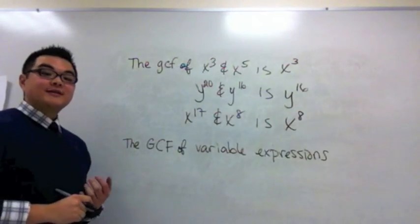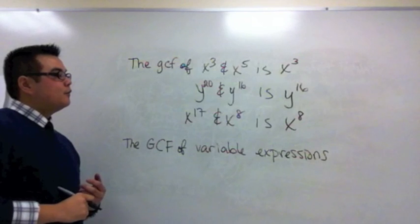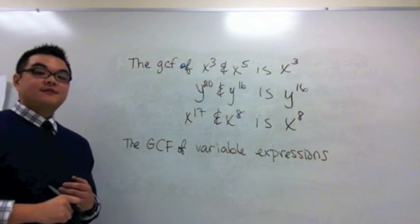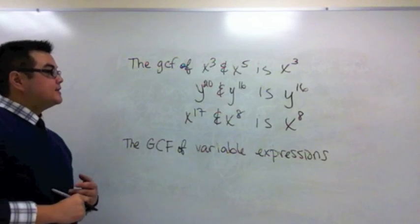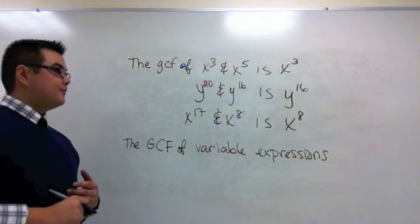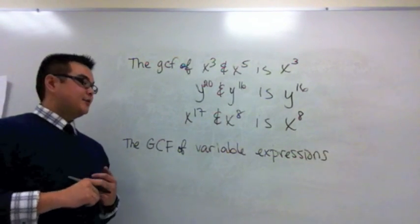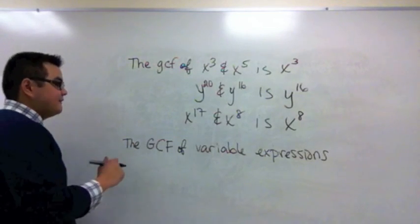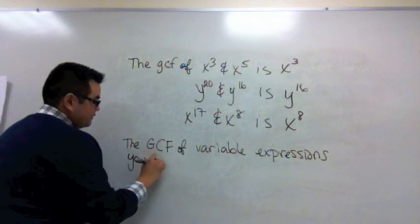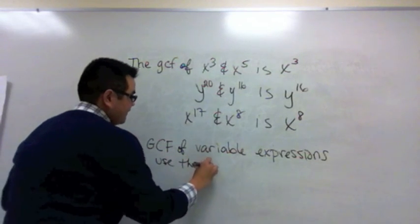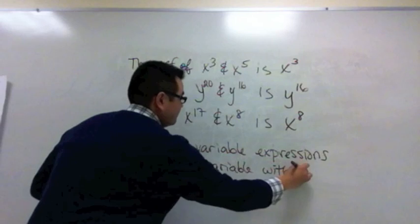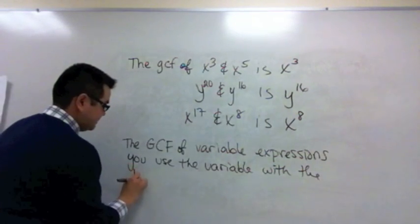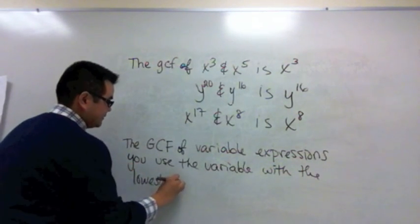If you look at all three examples, can you find a pattern where I determine the GCF of the variable expressions? If you notice, each time I use the same variable as well as the lowest exponent. To find the GCF of variable expressions, you use the variable with the lowest exponent.